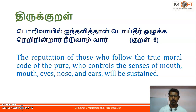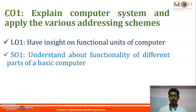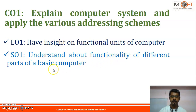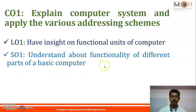With this quote we will start our session. The course outcome of the first unit is to explain computer systems and apply various addressing schemes. The learning outcome is to have insight on functional units of a computer. The specific outcome is to understand the functionality of different parts of a basic computer — there are five functional units: input, output, memory, arithmetic and logical unit, and control unit.